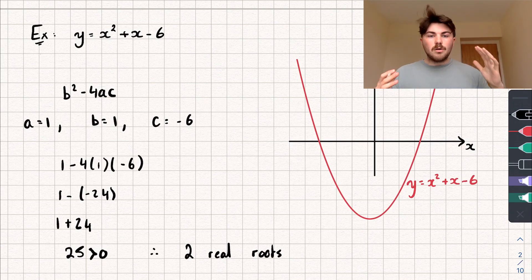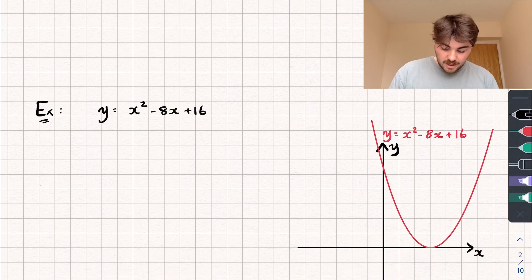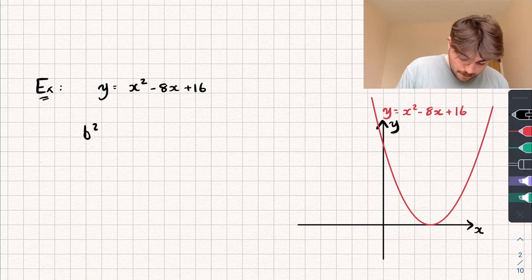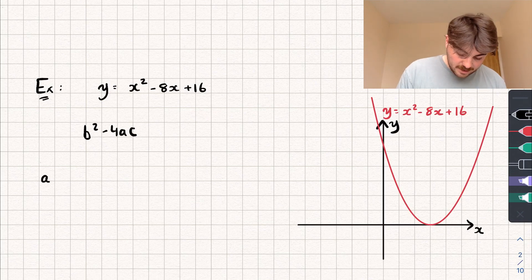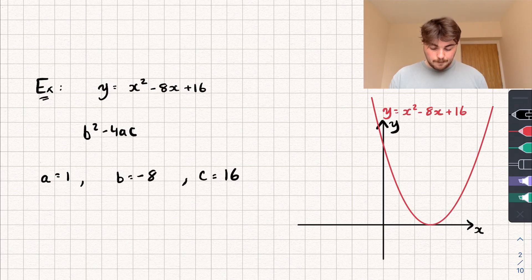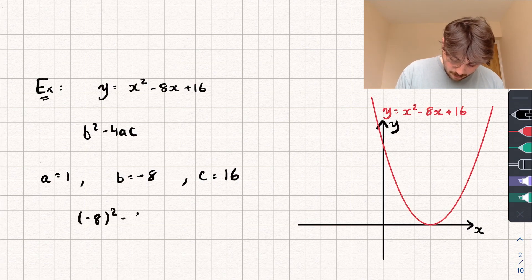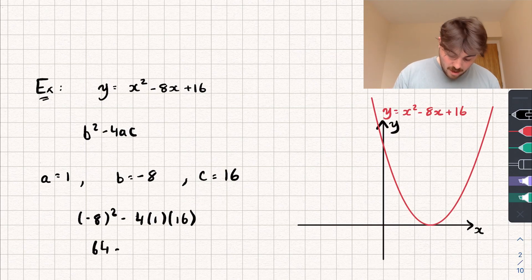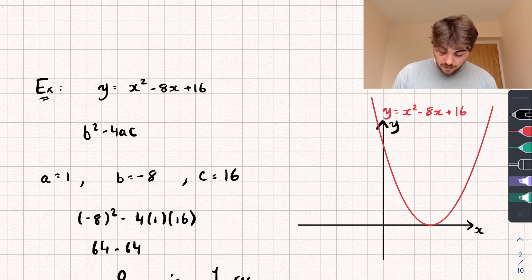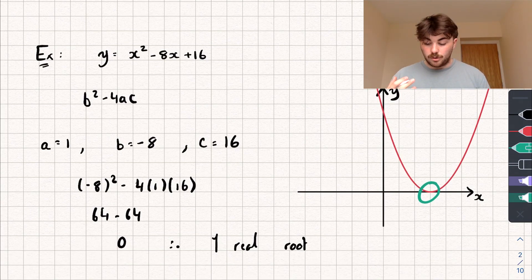So if our discriminant is greater than 0, the graph is going to hit the x-axis twice. Let's take a look at another example: y equals x squared minus 8x plus 16. You can see I've drawn a sketch of that graph. The discriminant is b squared minus 4ac. So a is 1, b is negative 8, and c is 16. Inputting this in: negative 8 squared minus 4 times 1 times 16. Negative 8 squared is positive 64, minus 4 times 16, which is also 64. So we get that it's equal to 0, and therefore one real root. You can see there's one part where the graph touches the x-axis, representing that one real root. So if our discriminant is equal to 0, you can expect our quadratic graph to just touch the x-axis once.